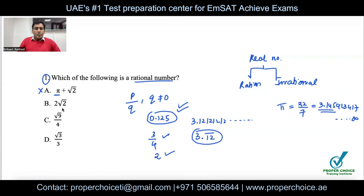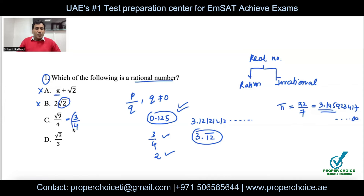Looking at the options: pi is irrational, so we eliminate it. √2 is a non-perfect square number, so it is irrational — eliminate it. √(9/4): the square root of 9 is 3, over 4, and since 9 is a perfect square, this is rational.